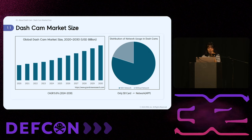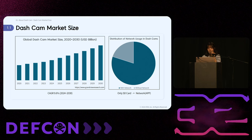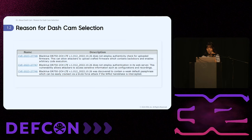Experts project a compound annual growth rate of 9.6% from 2024 to 2030. Unlike in the past, when only SD cards were used, most modern dashcams now use networks for connectivity and are controlled via dedicated apps. This convenience has significantly contributed to the dashcam market's growth. However, this technological advancement introduces new security threats. Despite this, only three CVEs have been reported in the past three years.